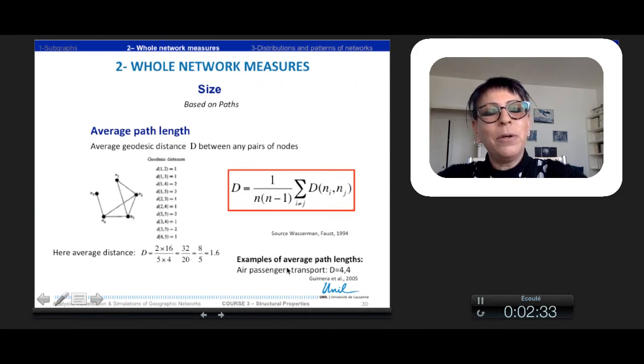Also, based on paths, we can make the average path length. So we divide all the geodesic distances and their summary by the total number of possible linkages between two nodes. And here, for example, the average distance is the total distance divided by 5 multiplied by 4, because there are 5 nodes. And so it is 1.6 in terms of number of paths. For example, also, for the air passenger transportation, the average path length is 4.4.